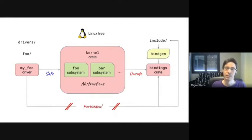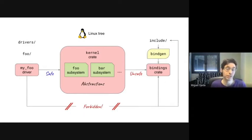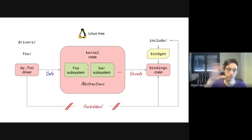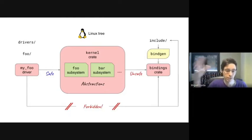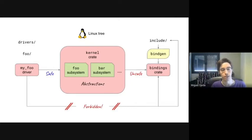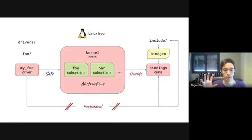Zooming in on the details: a driver like 'my_foo_driver' would call the kernel crate, which currently contains all the abstractions for the subsystems we are wrapping. These call into the C APIs, which Rust doesn't understand directly. So we use a tool called bindgen that generates a bindings crate from the headers in the kernel's include folder, exposing C functions and C types in their Rust-equivalent representation.